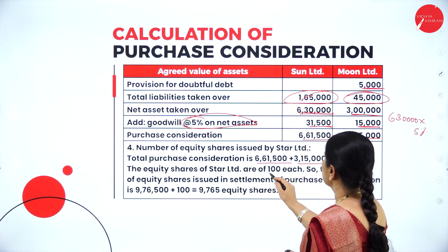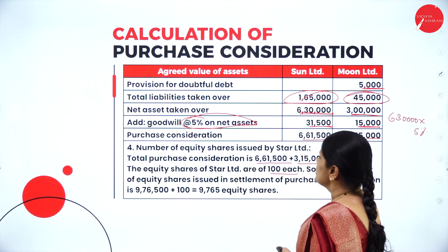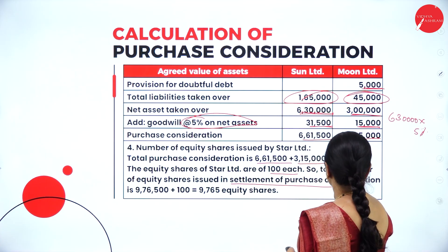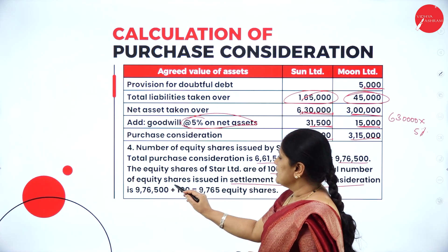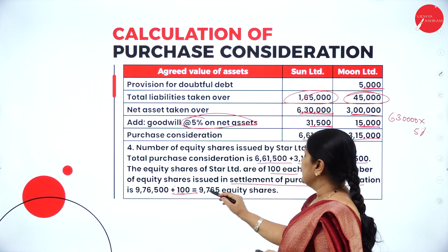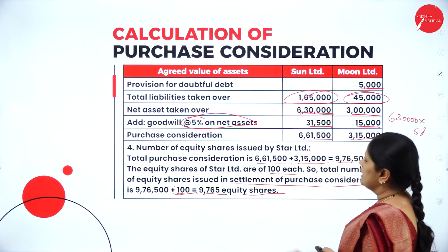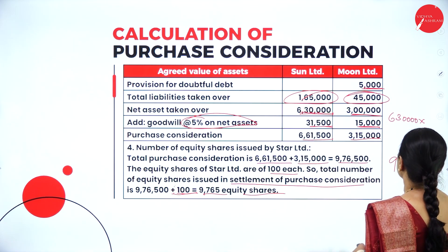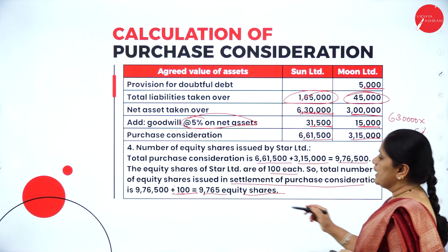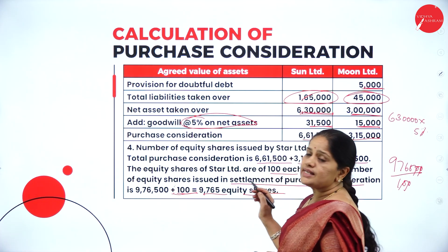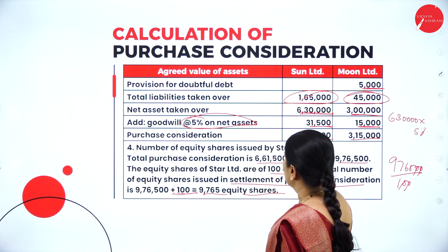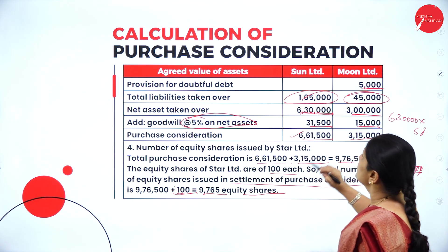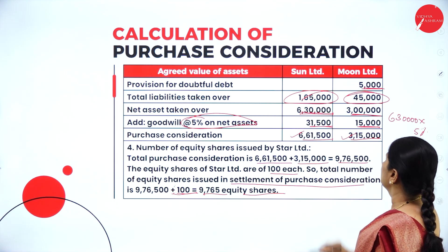The equity shares of Star Limited are of rupees 100 each. Total purchase consideration is 6,61,500 plus 3,15,000 = 9,76,500. So 9,76,500 divided by 100 gives 9,765 equity shares issued as purchase consideration. So we have calculated the purchase consideration for Sun Limited and Moon Limited.